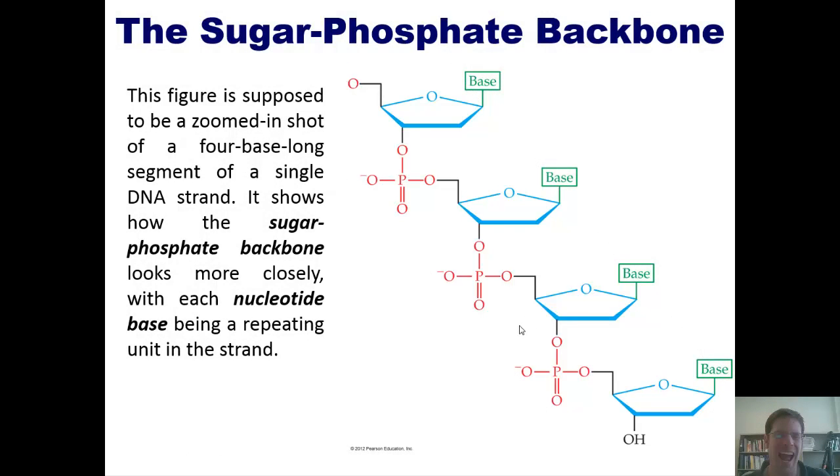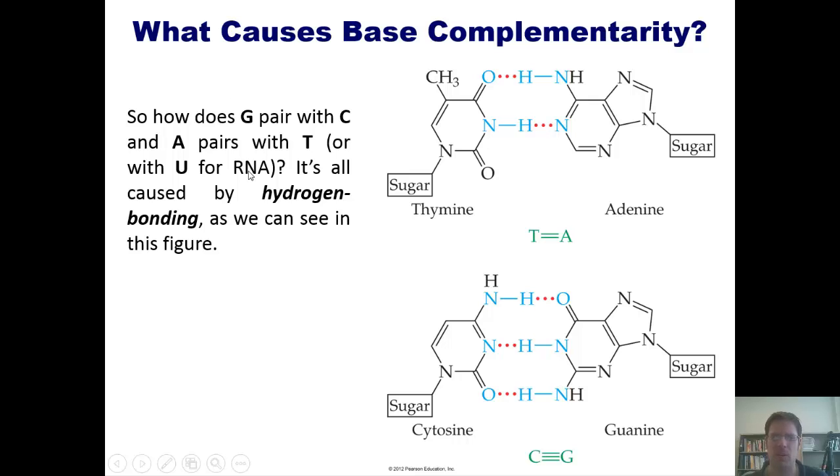So you might wonder, then, how does G pair with C and A pair with T, or A pair with U in RNA? The reason that happens is all because of hydrogen bonding, as we can see in this figure. You can see, for instance, that T, thiamine, hydrogen bonds in a complementary way to the adenine, right here, where I've got these nitrogen groups. Similarly, cytosine, or C, hydrogen bonds in a shapely complementary fashion with guanine, shown here.